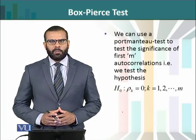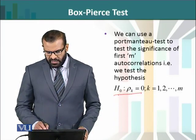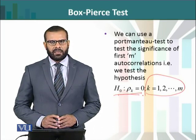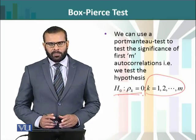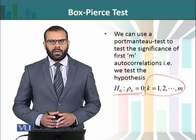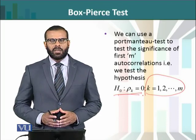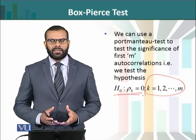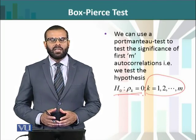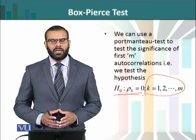یہ جو portmanteau test ہے یہ ہمیں help کر سکتا ہے کہ ہم autocorrelation کی significance کو test کریں — combined up to a specified number of lags — کہ k = 1 to m جتنی بھی autocorrelations ہیں یہ ساری کی ساری zero کے equal ہیں۔ اس طرح سے یہ portmanteau test ہمیں بتا سکتا ہے کہ up to a certain m، in total، کوئی ایک یا ایک سے زیادہ autocorrelations significant یا magnitude میں اتنی high ہیں کہ ہم residuals میں کہہ سکتے ہیں کہ significant amount of autocorrelation ابھی بھی موجود ہے۔